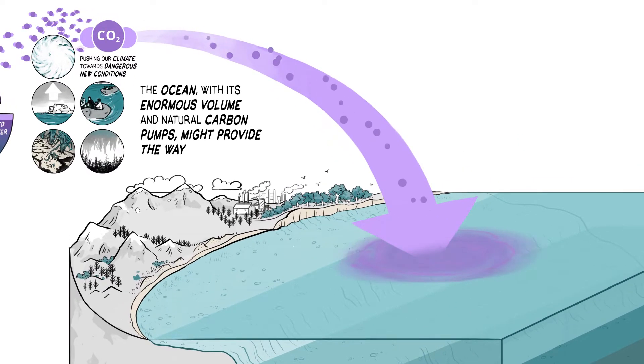CO2 diffuses into the surface layer of the ocean whenever it is more abundant in the air than in the water. Once dissolved, powerful carbon pumps remove CO2 from the surface.